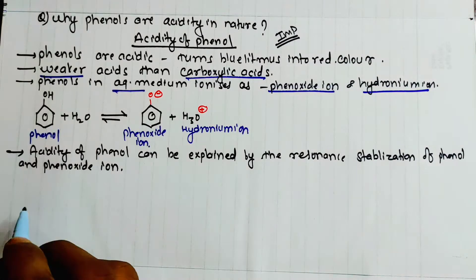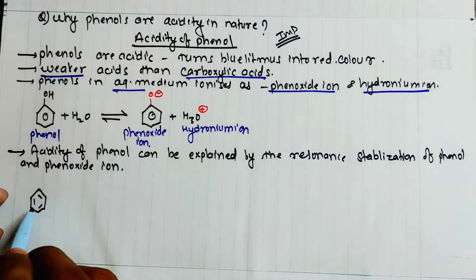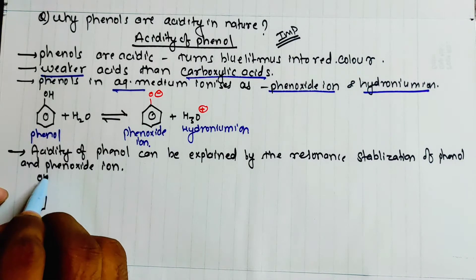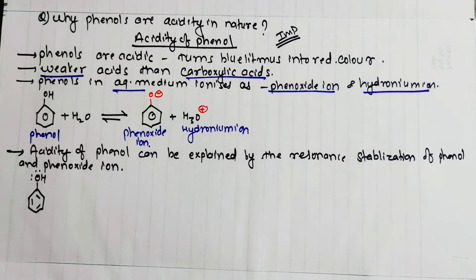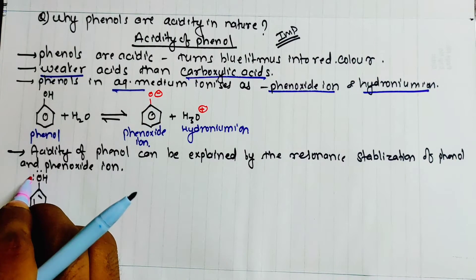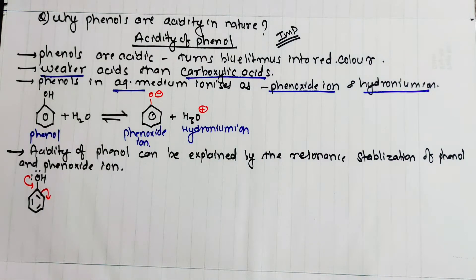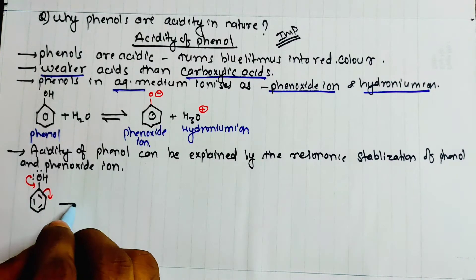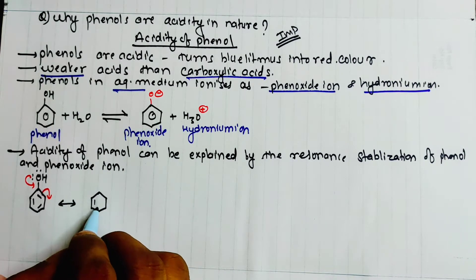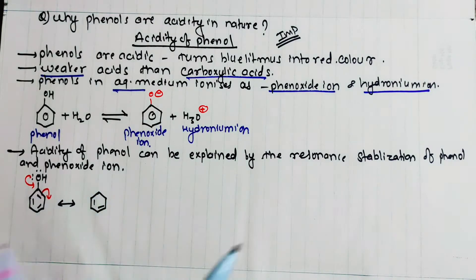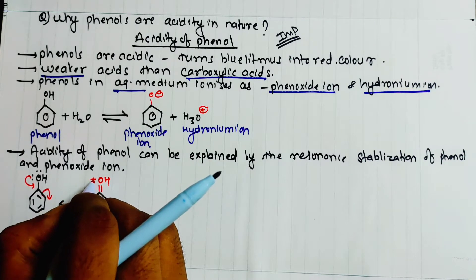I am going to show you the first thing about phenol. We have phenol with an OH group. This is the non-pair of electrons. Now, how do we start? We have that resonance. This is the resonance.